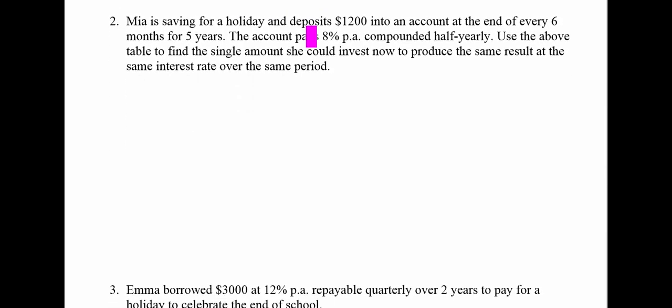So let's have a look at the next one. Mia is saving for a holiday and deposits $1,200 into an account at the end of every 6 months for 5 years. The account pays 8% per annum compounded half yearly. So my rate is 8%, but it's compounded half yearly, so we know we have to divide by 2, so we get 4%.